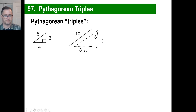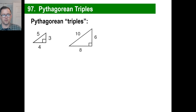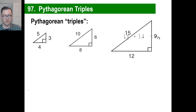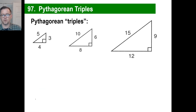Here's an example where we've taken the 3-4-5 and multiplied each by two — giving us 8, 6, and 10. We know 16 plus nine is 25, so eight squared is 64, six squared is 36, and 64 plus 36 is 100, which is 10 squared. That's the kind of thing that works. We can multiply everything by four and it still works.